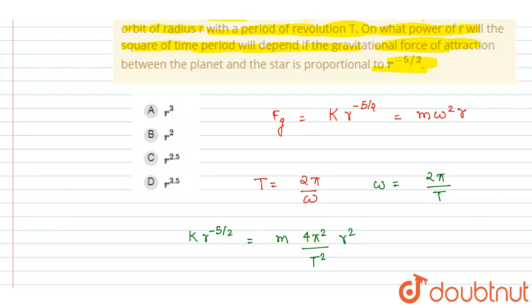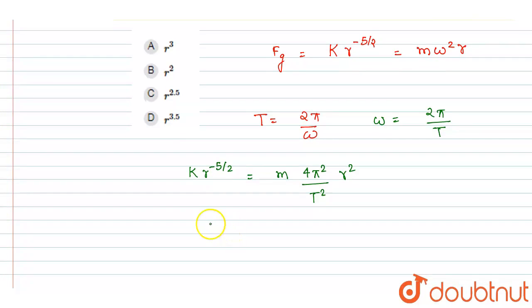From here, if I take the T term on one side, I will write T squared equals 4π squared m over k times r squared, so it will be r squared plus 5 by 2, right?